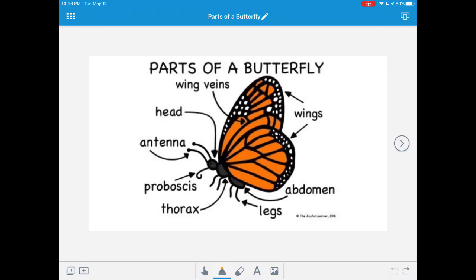One very important part of the butterfly that the caterpillar did not have is called the proboscis. Can you say proboscis? The proboscis is a straw-like body part that helps the butterfly to eat its food. The butterfly will fly around from flower to flower, and when it finds something that seems tasty, the butterfly will stick its proboscis into the flower and drink the sweet nectar.